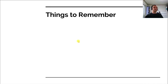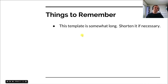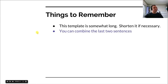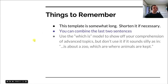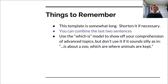A few things to remember about your introductions. The template is somewhat long — shorten it if necessary. If you don't have enough time, you can combine the last two sentences into one. Also, the first sentence uses 'which is' to show off comprehension of the topic, but don't use it if it sounds silly. If they're talking about zoos or bananas, you don't need to explain what those are. For low-level students I remove the 'which is' part, but for high-level students I leave it in — use your best judgment.